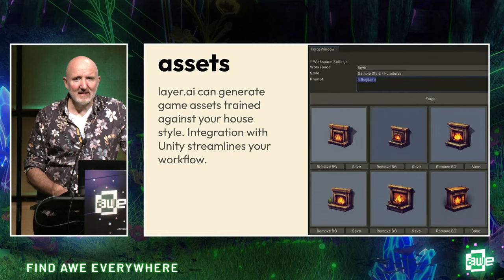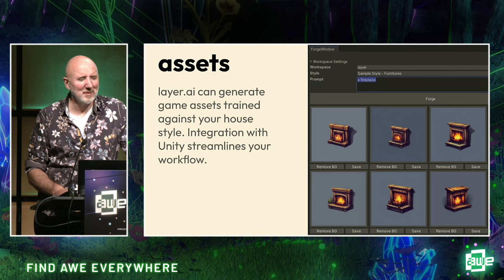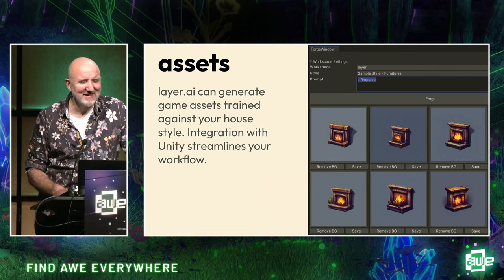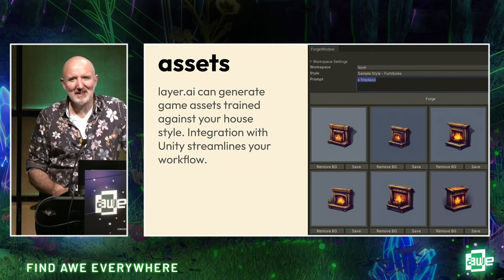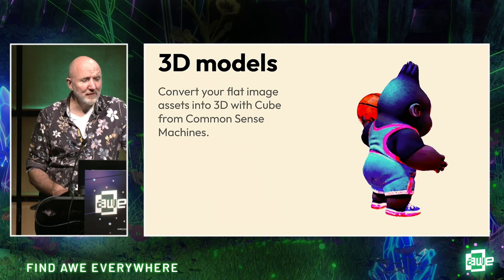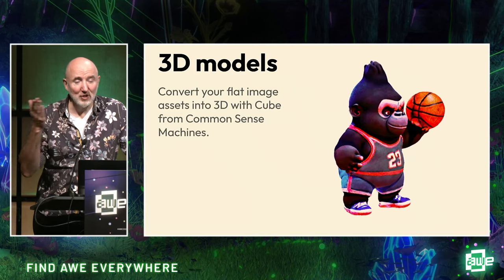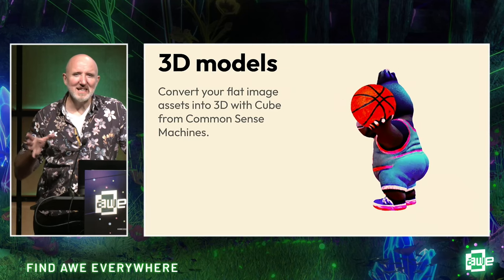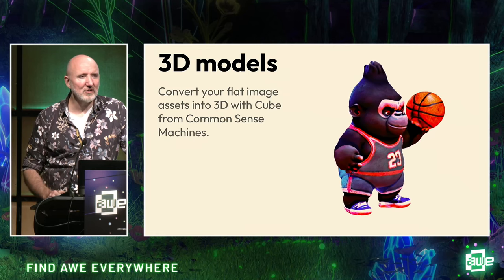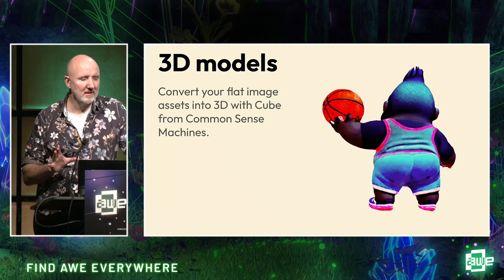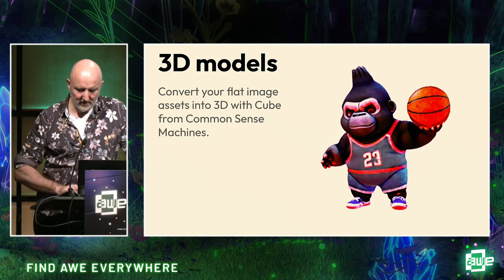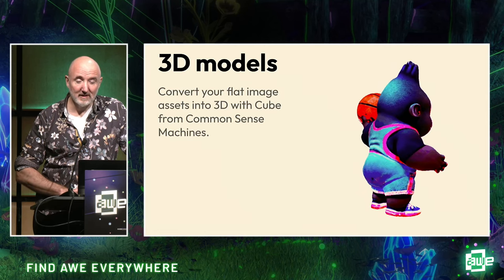And then assets. This is the kind of brain-numbing stuff — do we really need human beings to create six different versions of a fireplace? I think this is the kind of thing you can realistically say is a very valid use for AI. And if you want to go to the full 3D thing, you can take those assets and put them into a tool called Cube in this instance. Image-to-3D is still a little rough around the edges, so take care with some of this stuff — some is better than others. Watch this space — it's improving rapidly.